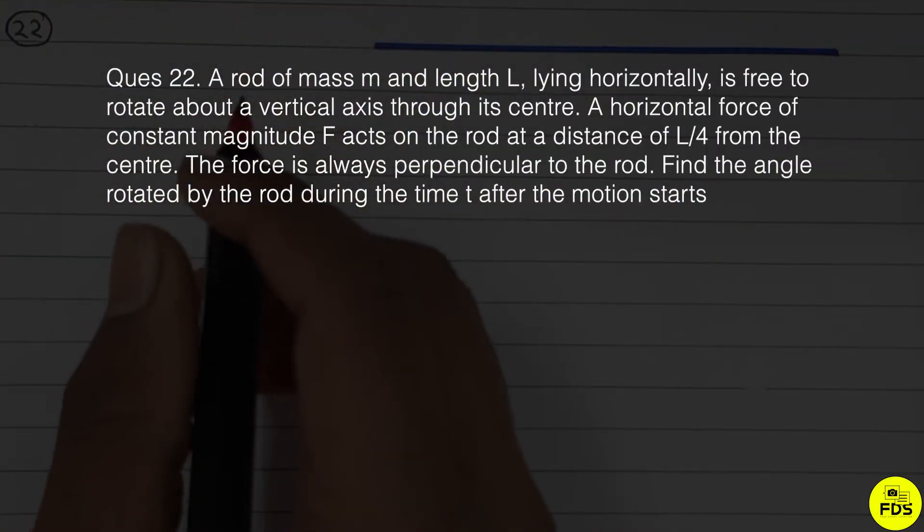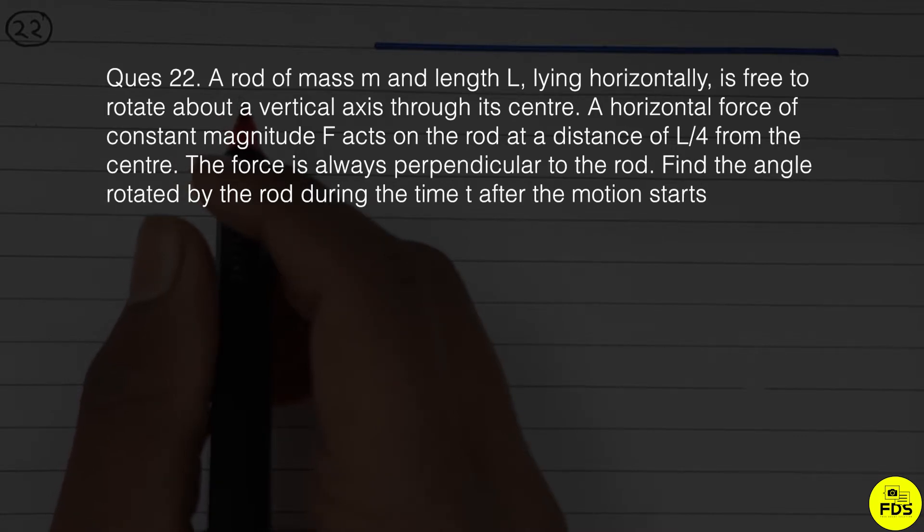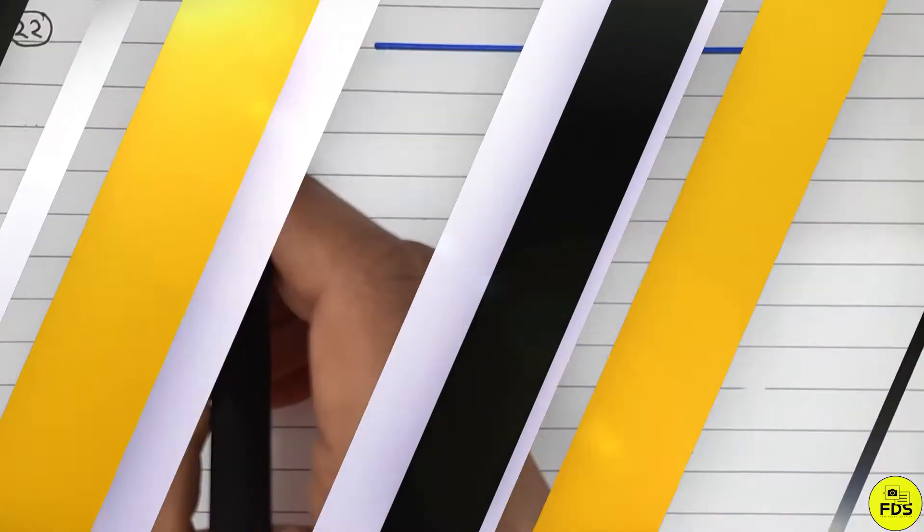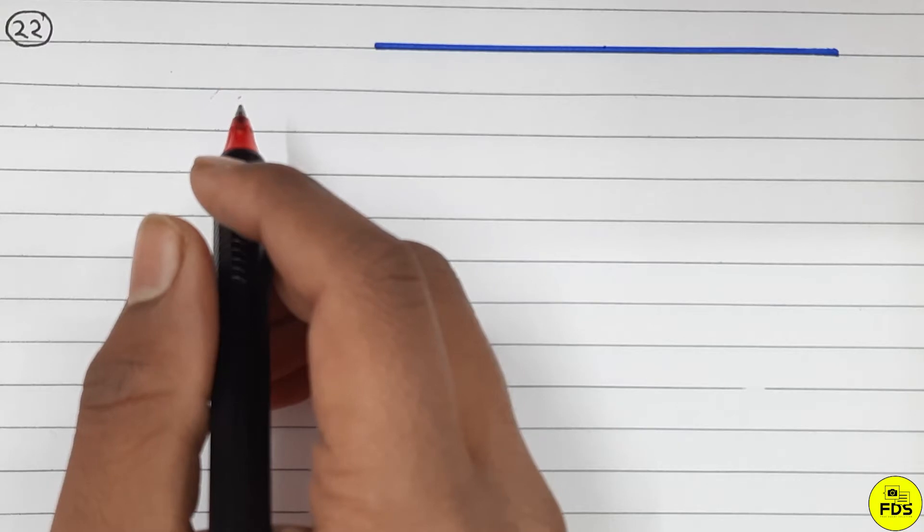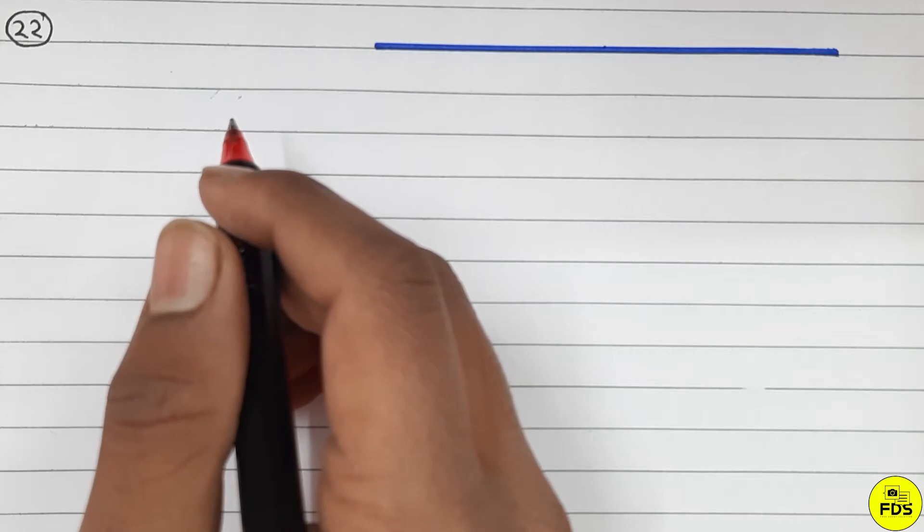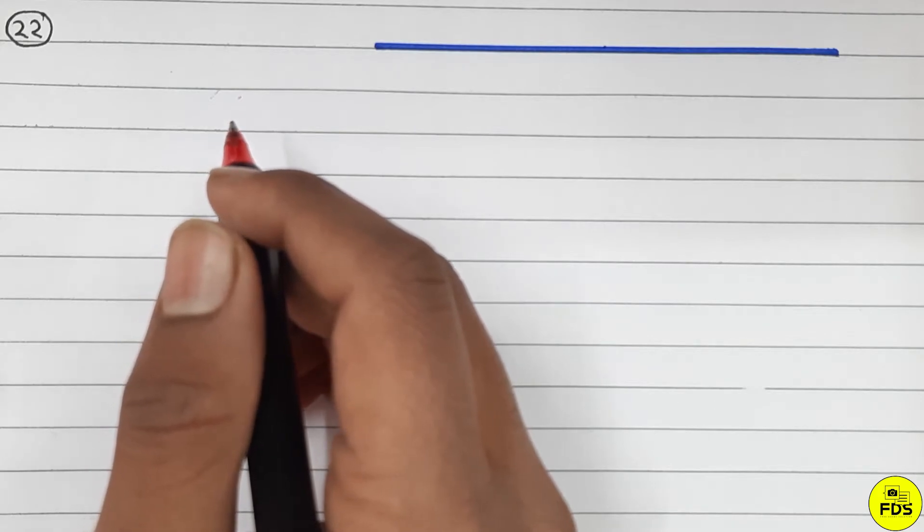A rod of mass small m and length capital L, lying horizontally, is free to rotate about a vertical axis through its center. A horizontal force of constant magnitude F acts on the rod at a distance of L by 4 from the center. The force is always perpendicular to the rod. Find the angle rotated by the rod during the time t after the motion starts.